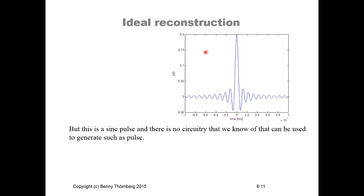This pulse is what we call a sinc pulse, and there is no electrical circuitry — no passive components such as resistors, inductors, capacitors, or any kind of amplifier — that can actually generate this kind of pulse. So we have studied an ideal case that is not possible to realize in the real world.